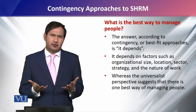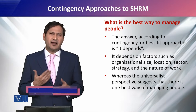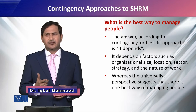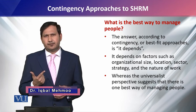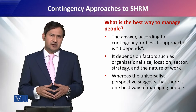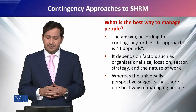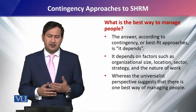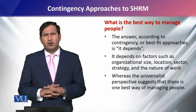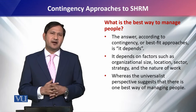In other words, Contingency Theory or the Contingency Perspective on managing Human Resource Management suggests that the best way depends on factors such as organizational size, location, sector, strategy, and nature of work. What is the best way to manage people in an organization? It depends.